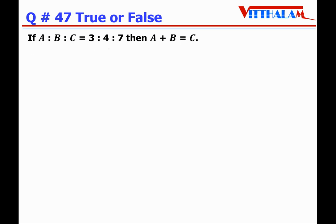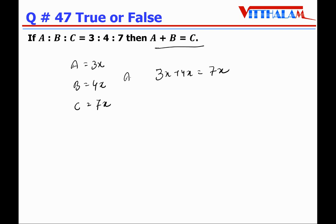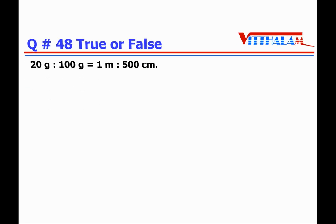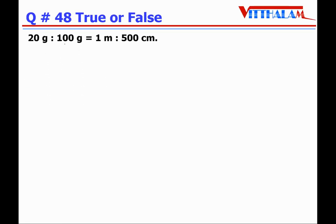Question 47: If a:b:c = 3:4:7, then a+b = c — True. Let a = 3x, b = 4x, and c = 7x. Then a + b = 3x + 4x = 7x, and 7x is nothing but c. So the given statement is True.